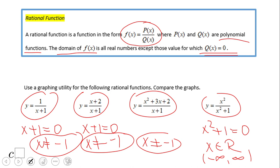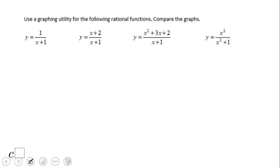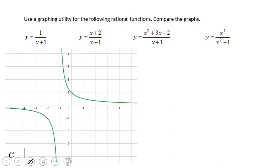I said here, use a graphing utility for the following rational functions. Compare the graphs. The first graph should not be a surprise—it's a reciprocal function, one unit moved left. We can see this vertical asymptote. The domain was any number but negative one. That vertical asymptote, you can also notice the horizontal asymptote.